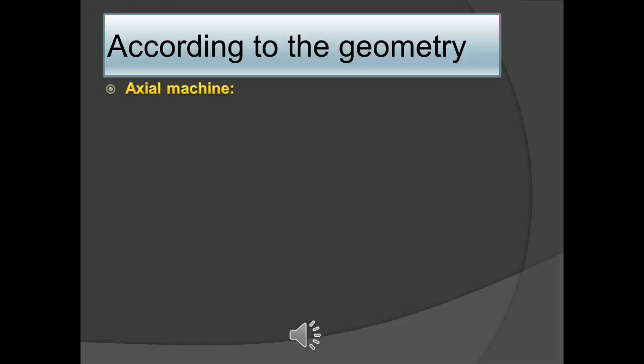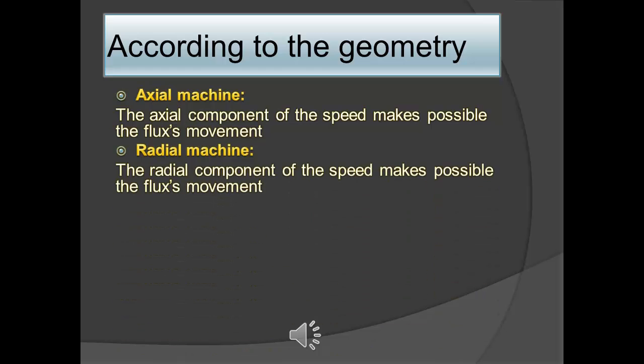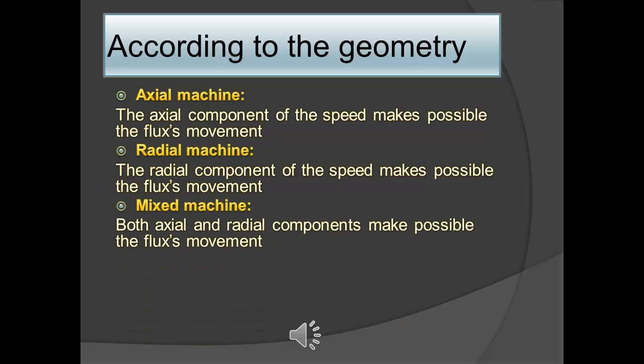Axial machine, where the fluid always goes through the impeller in the axial direction. Radial machine, where the fluid goes into the impeller and the geometry of the impeller changes the direction of the fluid and achieves that the radial component of the speed was responsible for the movement. And finally, the mixed machine, where both axial and radial components make possible the fluid movement.